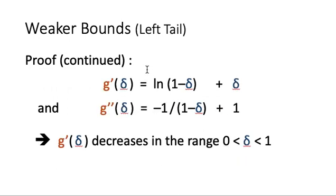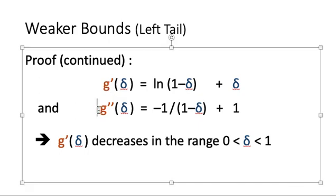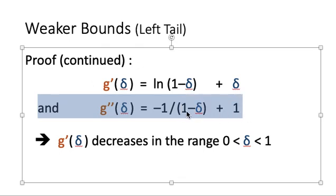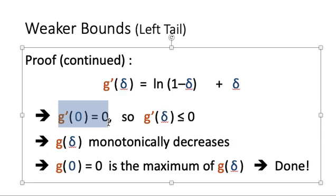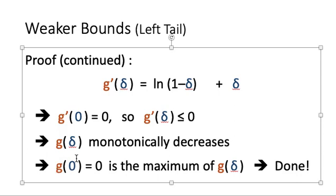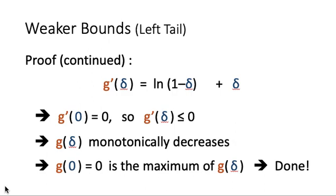We differentiate to get g'(delta) and g''(delta). This time it is simpler: g''(delta) is always negative, so g'(delta) is always decreasing. The maximum of g'(delta) is g'(0) = 0, and all values after that are decreasing and thus non-positive. This implies g(delta) is also decreasing, with maximum at g(0) = 0. Therefore g(delta) ≤ 0 for all delta in [0, 1], completing the proof of the left-tail bound and the weaker bounds overall.